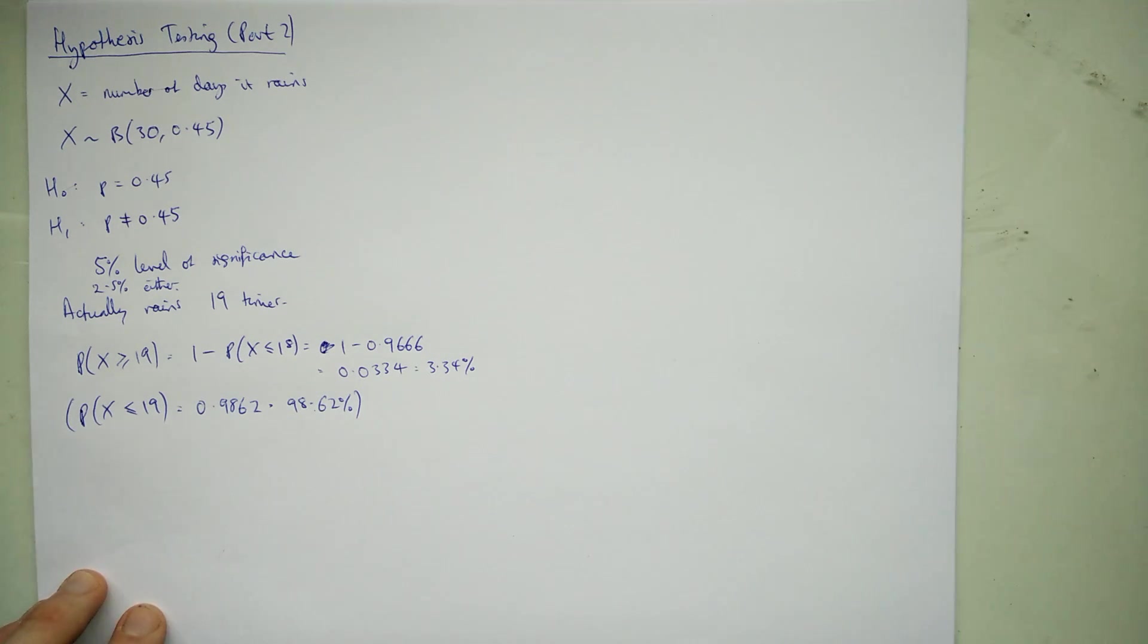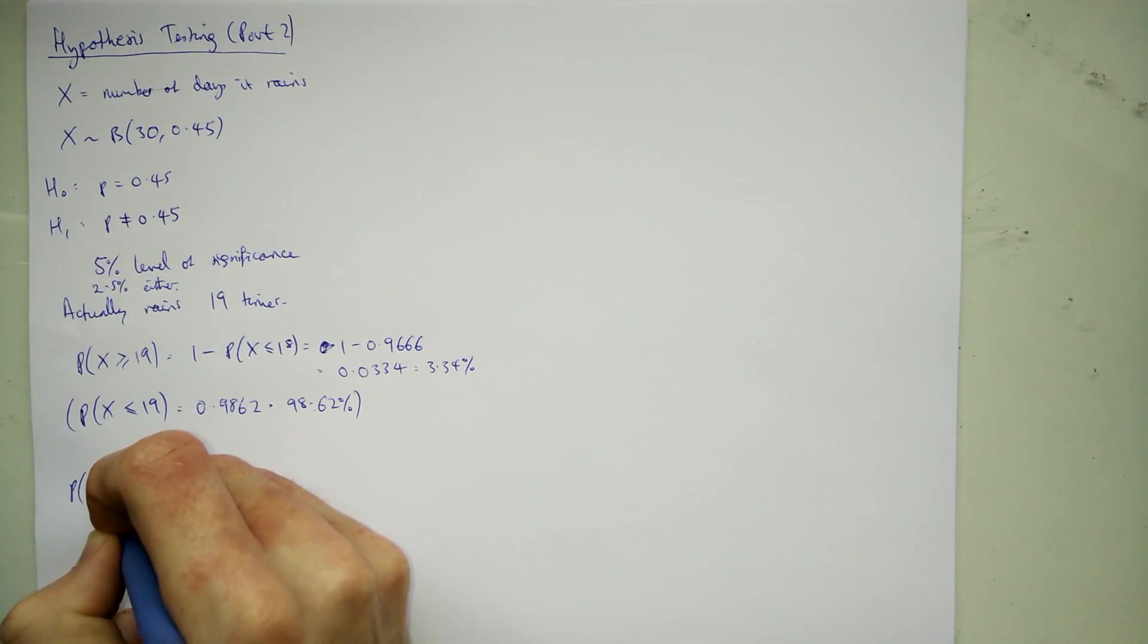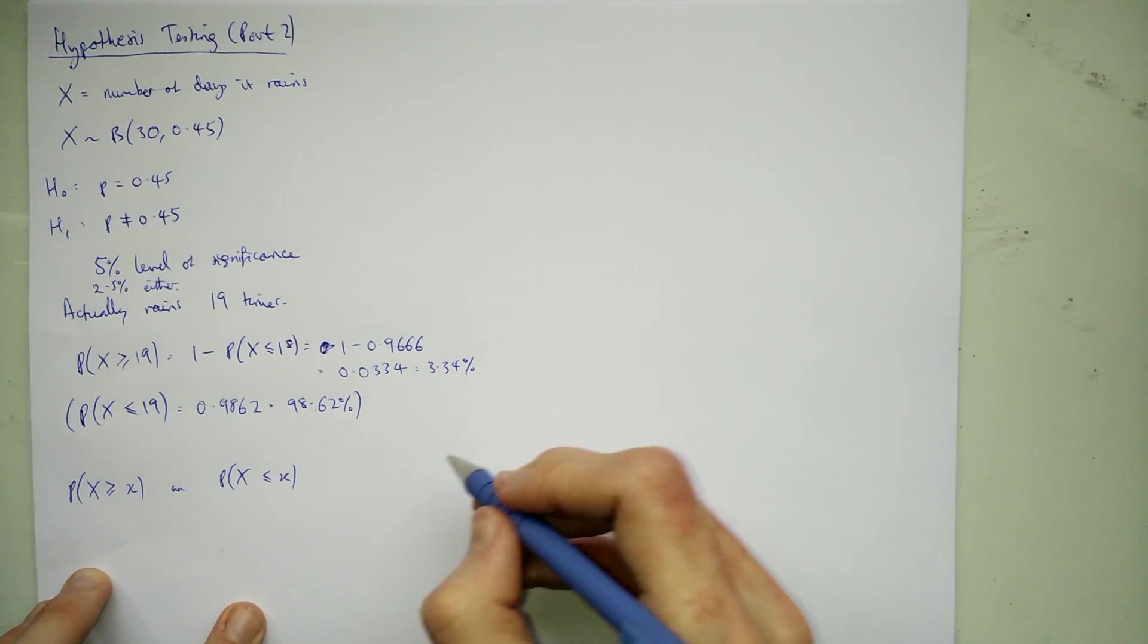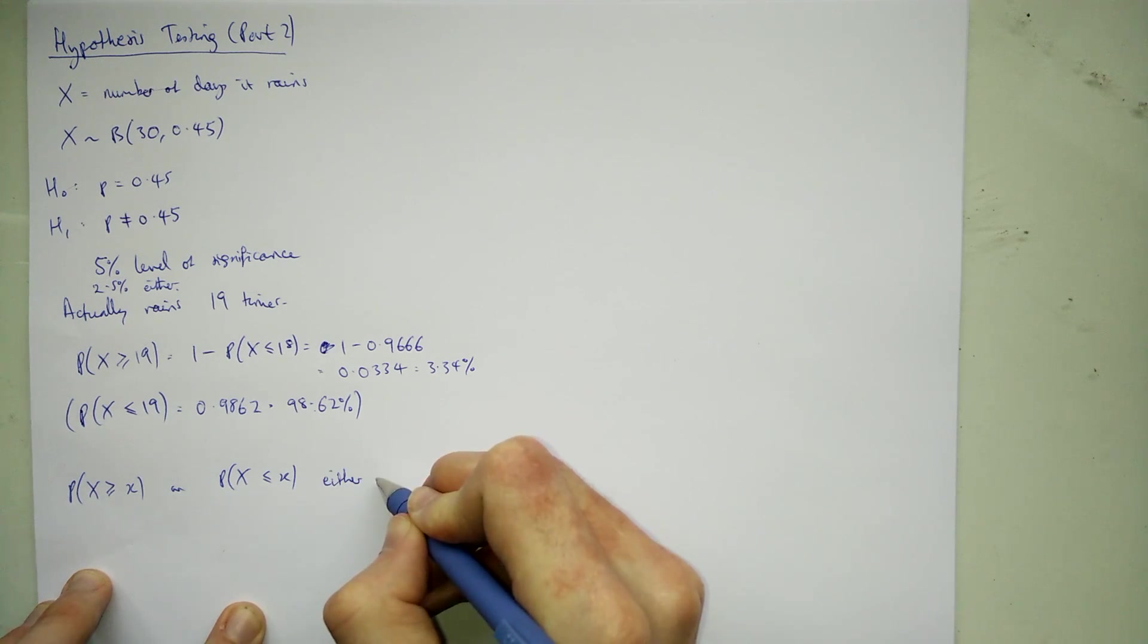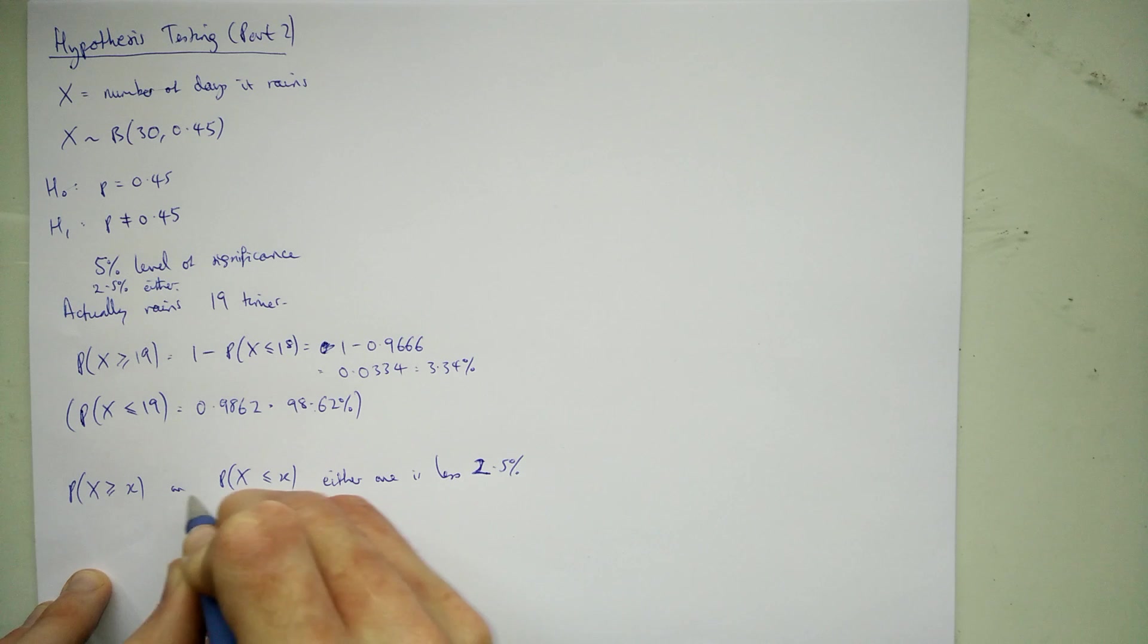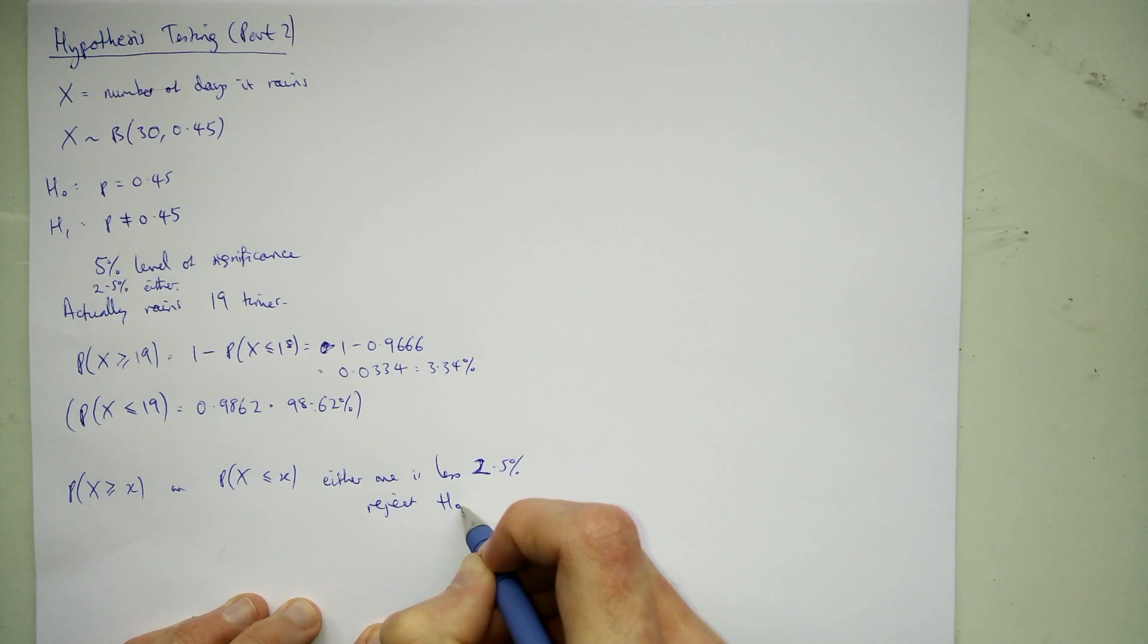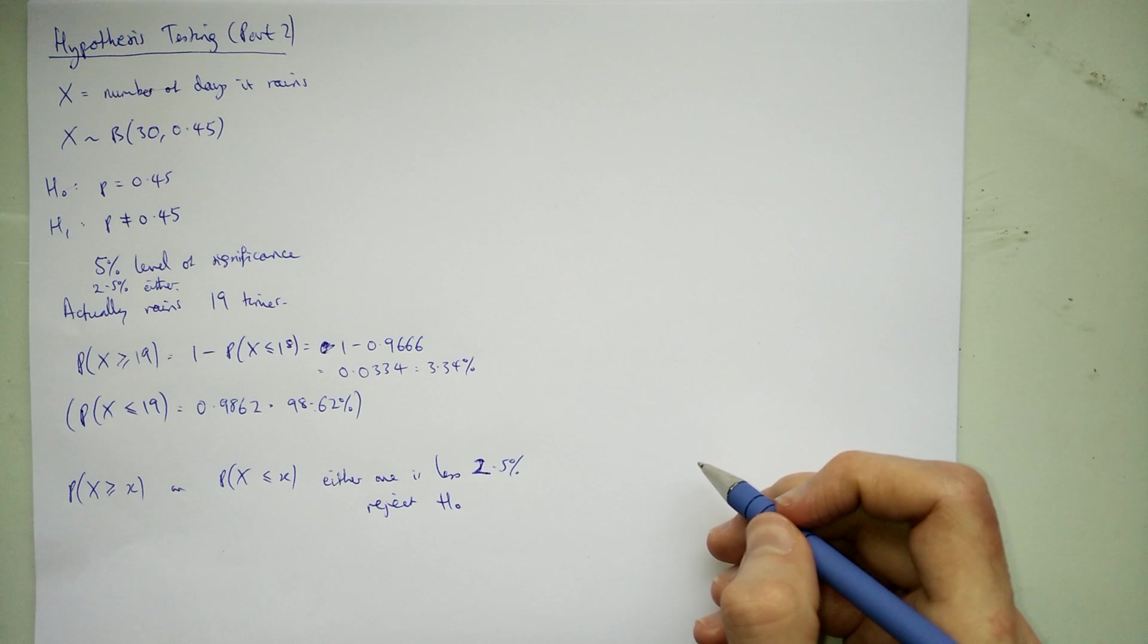What we're asking now you see is what's the probability of our value X being bigger than our observation or the probability of our X being smaller than our observation. If that's really unlikely, if either of those percentages, either one is less than, well not 5% but 2.5%, if either one is less than 2.5% then we would reject our null hypothesis. It means the probability is not 0.45. We don't know if it's bigger or smaller but it's one of the two. If not we keep it.